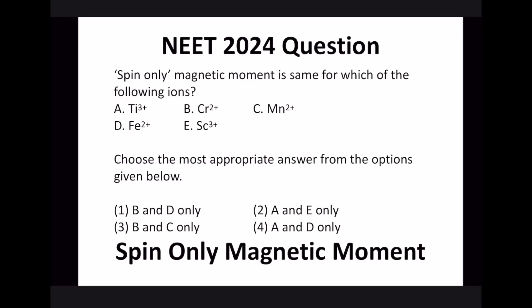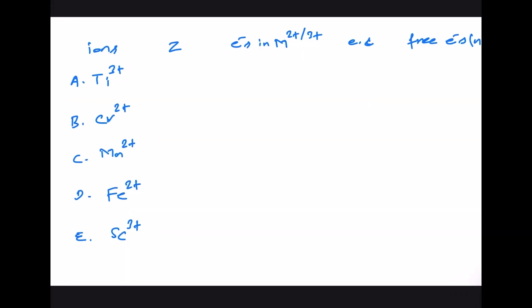Here is a question based on spin only magnetic moment: the spin only magnetic moment is the same for which of the following ions? We know that spin only magnetic moment is given by μ = √(n(n+2)) Bohr magnetons, where n is the number of unpaired electrons.